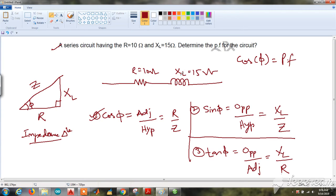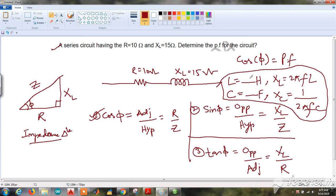Please remember, if only L was given, some Henry was given, so you would have used the formula to convert L to XL, that is 2πfL. Similarly, if C was given, that is capacitance was given in Farads, you would convert C to XC by 1/(2πfC), where f is the frequency.